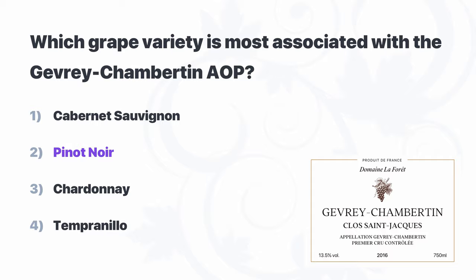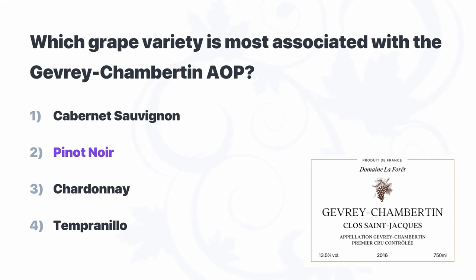Cabernet Sauvignon is very specific to the Médoc in Bordeaux. So if we think about Pauillac, Margaux, or Pessac-Léognan, Gevrey-Chambertin is not one of those appellations. So let's think Burgundy. We have to remember which villages produce red wines and which produce white wines. Puligny-Montrachet and Meursault produce white wines, while Gevrey-Chambertin and Nuits-Saint-Georges produce red wines. So our answer is Pinot Noir.